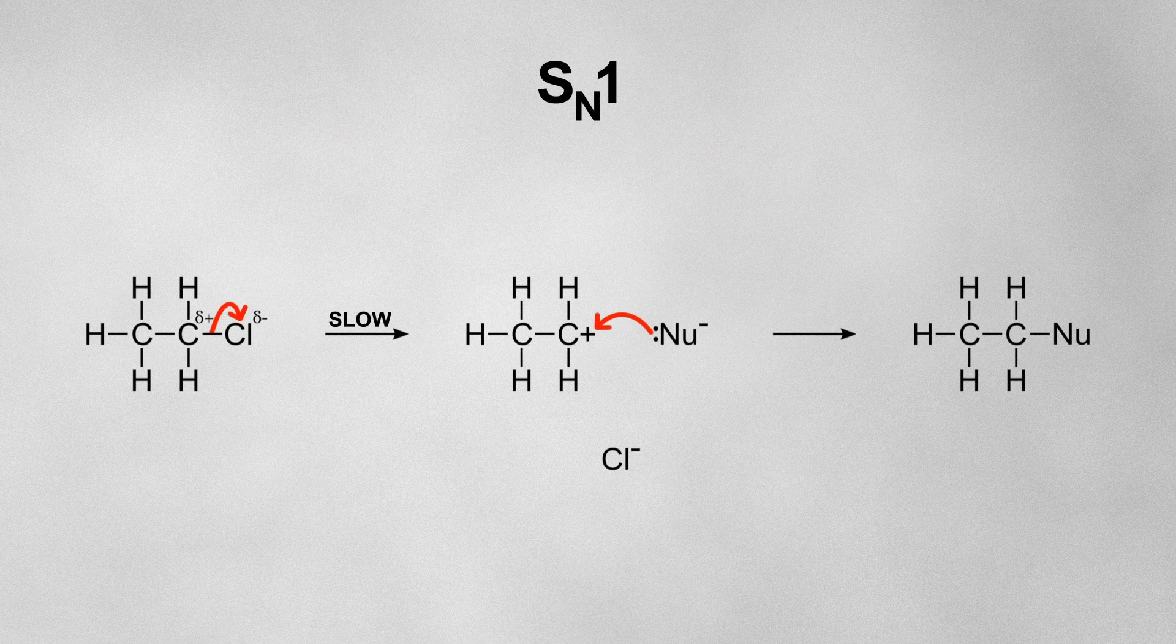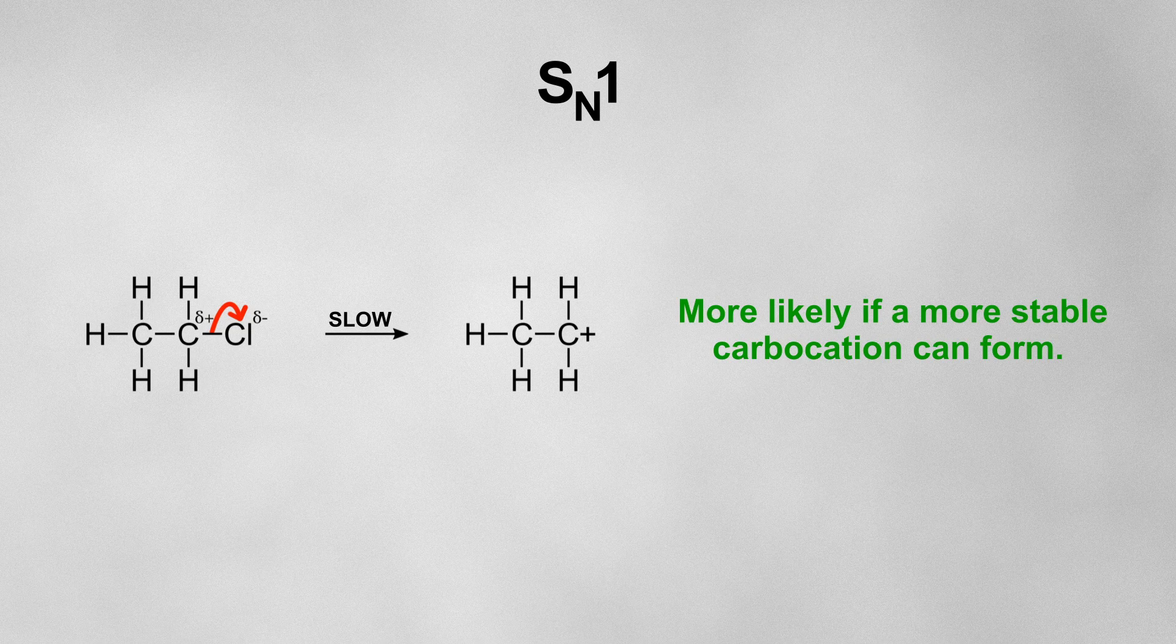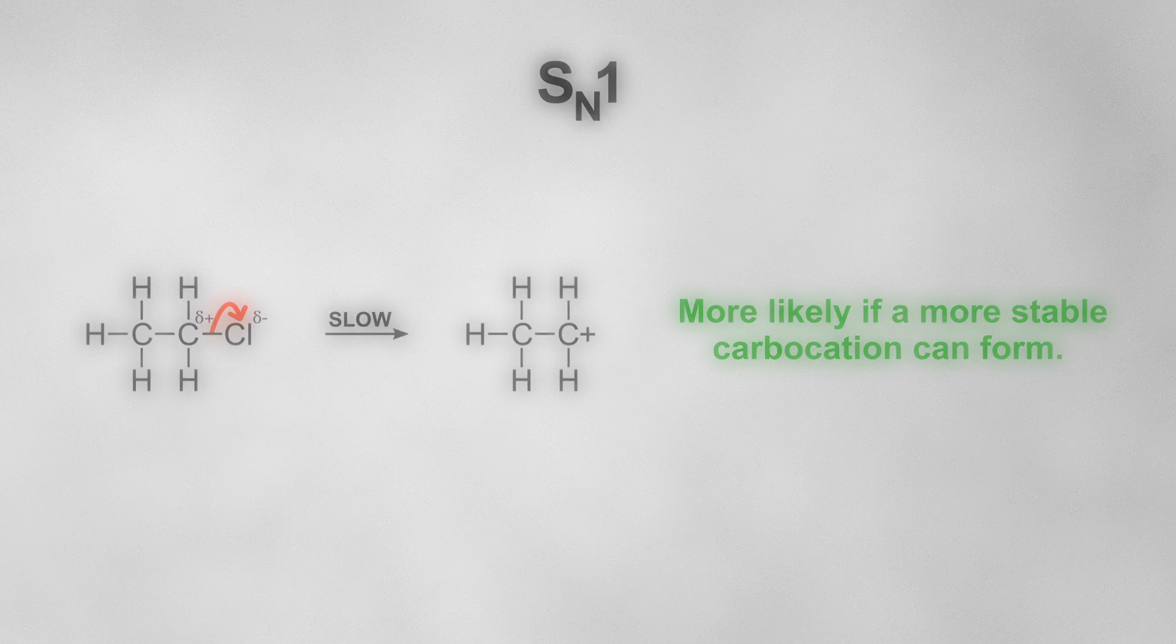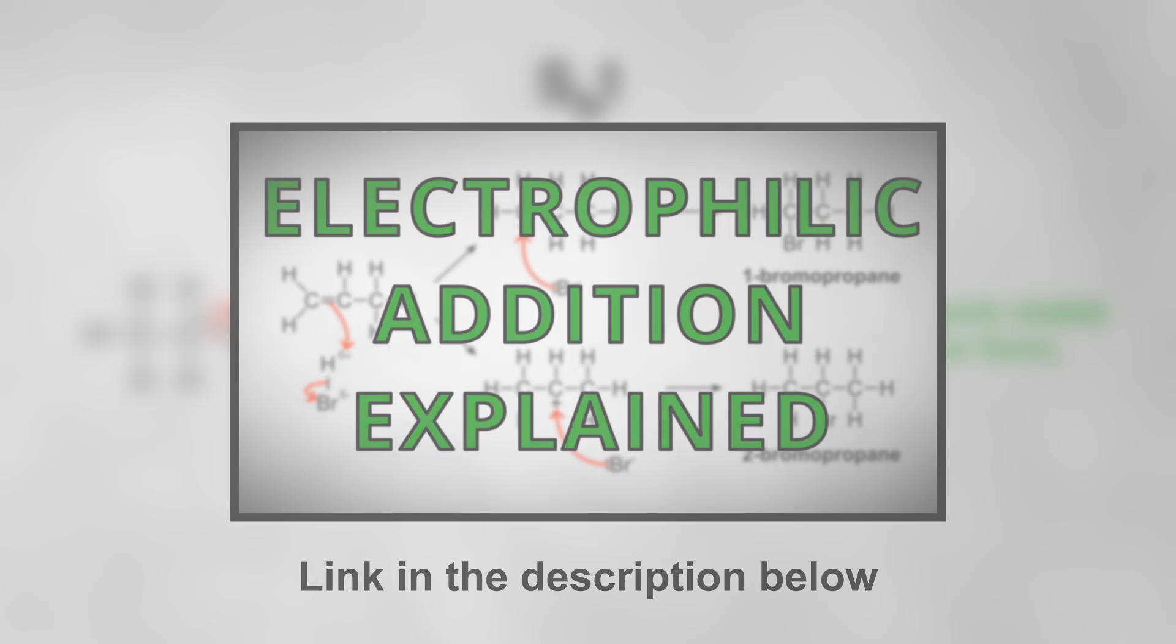Let's start with SN1. The biggest barrier for this mechanism is the formation of the carbocation. So SN1 will be more likely if a more stable carbocation can form. I covered this in my electrophilic addition video, but I'll quickly recap it here as well.